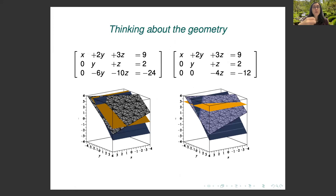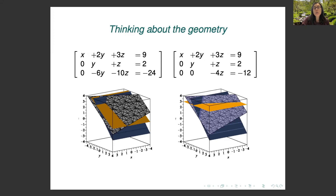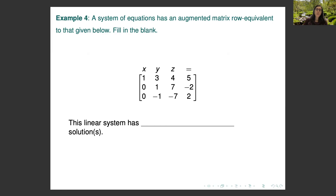Row operations preserve the solution set. Here we have two different sets of equations corresponding to steps in the row reduction process, related by the operation: six times row two plus row three replaces row three. The equations are not identically the same, and the graphs of the systems are not the same — the orange plane moves because of the row operation. But the solution set — the point where all three planes intersect — stays exactly the same in both graphs. Row operations change the system into one that's easier to solve while preserving the solution set.